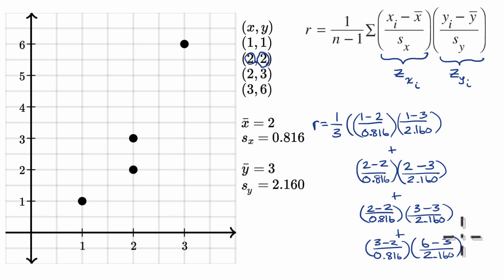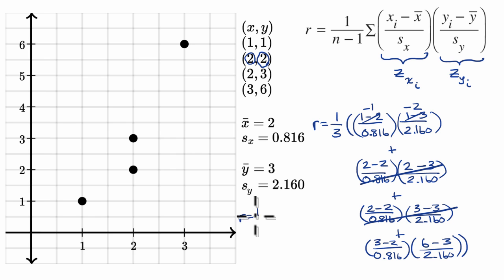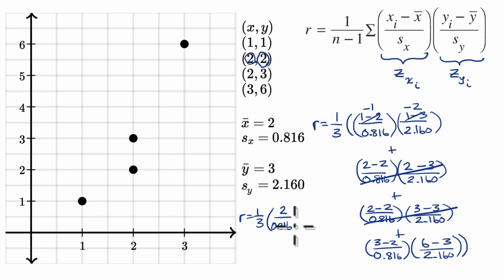Before I get a calculator out, let's see if there are some simplifications. Two minus two is zero, and zero times anything is zero, so that whole term is zero. Two minus two is zero and three minus three is zero, so that whole term is also zero. For the first pair: one minus two is negative one, and one minus three is negative two — so negative times negative is positive, giving us two over 0.816 times 2.160.